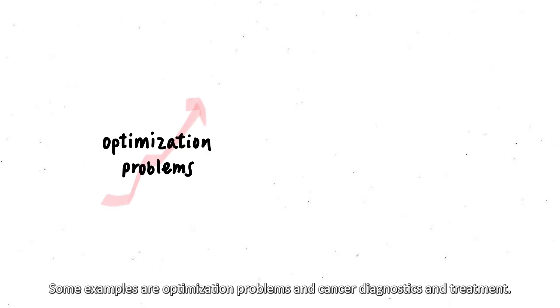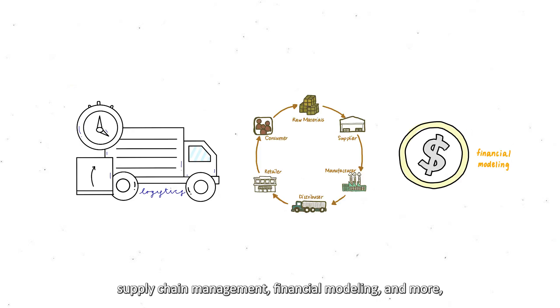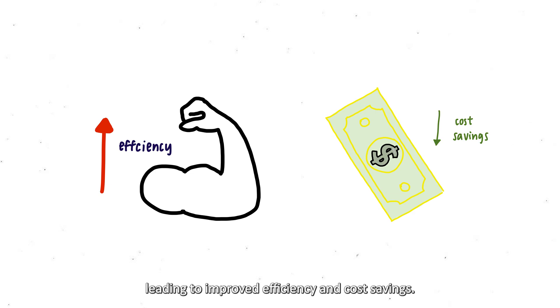Some examples are optimization problems and cancer diagnostics and treatment. Quantum computers can solve optimization problems faster than classical computers, which have applications in logistics, supply chain management, financial modeling, and more, leading to improved efficiency and cost savings.